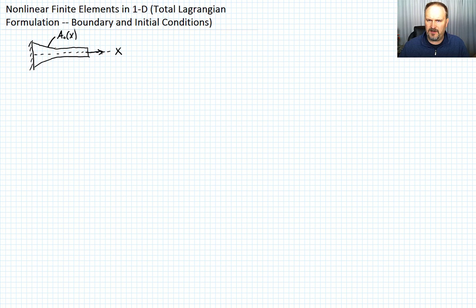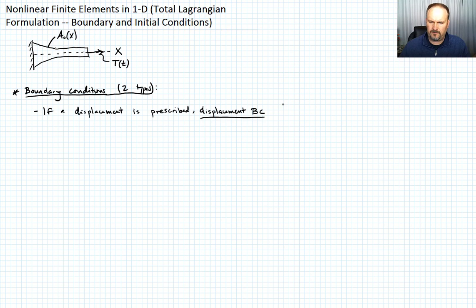Let's talk about the boundary conditions of the problem. There are two types of boundary conditions, and I'm doing this so we become accustomed to how we describe them. The first type is if a displacement is prescribed - that's a displacement boundary condition applied on gamma_u.